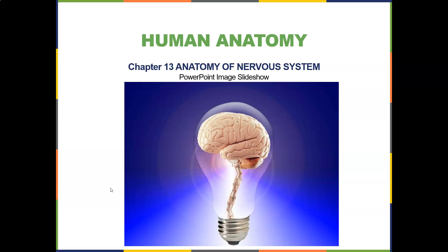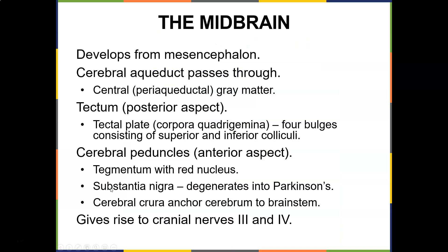As we continue on to the parts of the nervous system, the midbrain develops from the mesencephalon. The cerebral aqueduct passes through it with the central periaqueductal gray matter. The tectum is the posterior aspect — the tectal plate. You have the corpora quadrigemina, which are four little bulges. The superior colliculi handle vision, and the inferior colliculi are responsible for hearing. If you hear a jackhammer and turn toward that stimulus, the inferior colliculi is the reason you turn toward that loud noise.